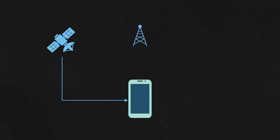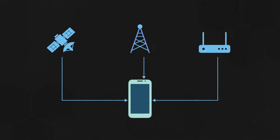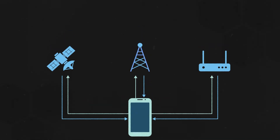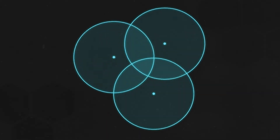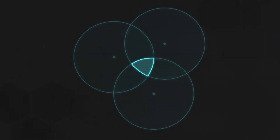As you move about the world, your smartphone is constantly collecting data about your location from sources like satellites, cell towers, and Wi-Fi access points. It communicates that information back and forth with all these sources. Mobile devices use this raw data to triangulate — that is, measure its angles from multiple sources — to more accurately determine its position.